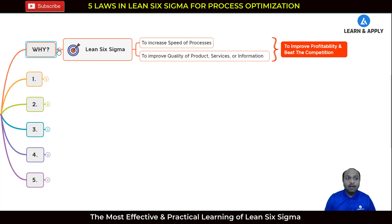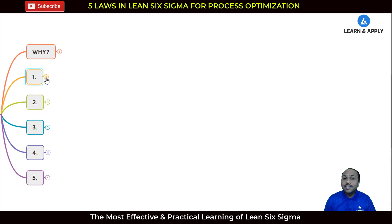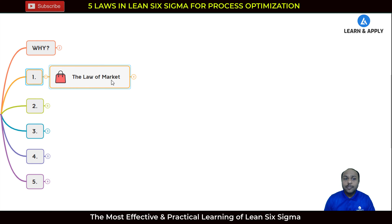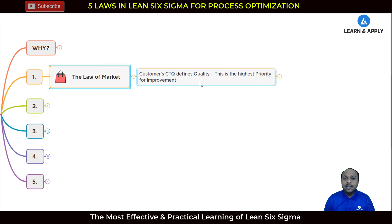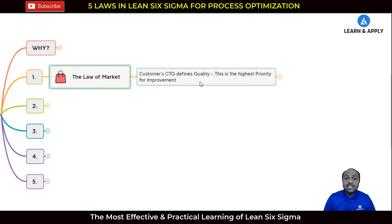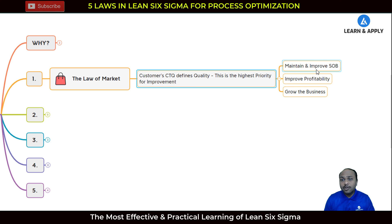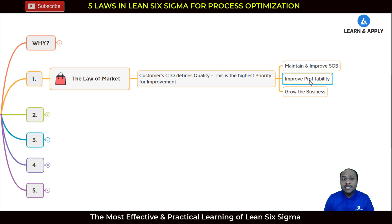The first law in Lean Six Sigma for process optimization is the law of market. This law states that the customer's critical-to-quality requirements define quality and represent the highest priority for improvement. That means you need to first understand who your customer is and what is important to them — whether implementing Lean alone, Six Sigma alone, or Lean Six Sigma together. Following the law of market is critical to maintaining and improving your share of business, profitability, and market growth.